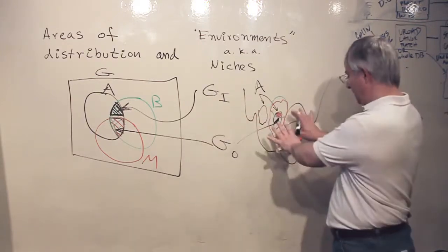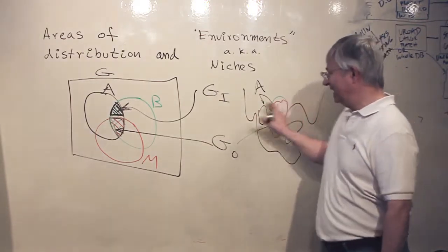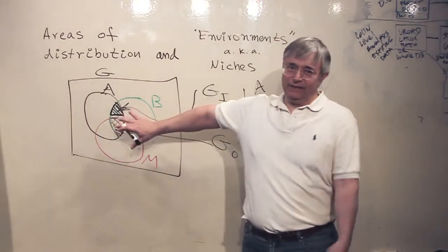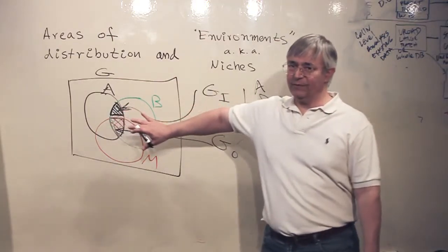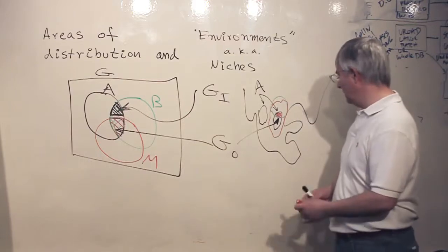This is, as you can see, a more complicated, less nice Venn diagram. This is a simple mathematical abstract Venn diagram. This is more complicated.